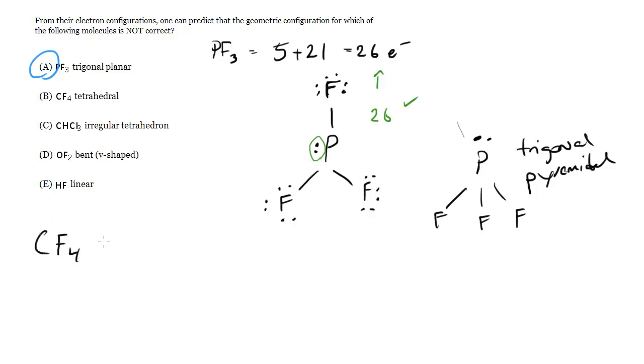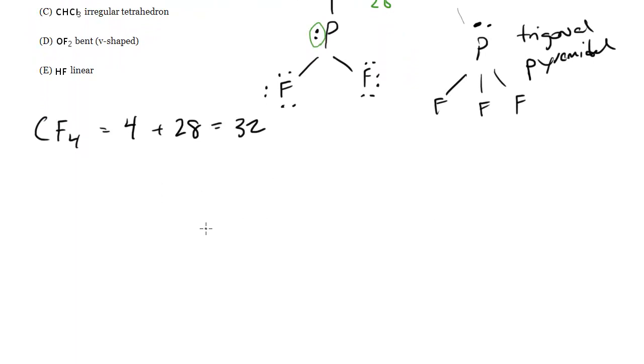CF4. So C has 4 and each Fs have 7, so we get 28 which is 32. So we got C, F, F, F, and F. Put in our electrons to complete the octets. Notice carbon already has a full octet, so we're done there.